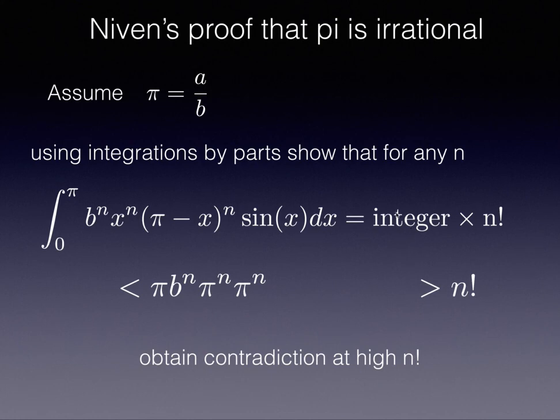At very large n, our equality has to be bigger than something, which is smaller than this term, and it also has to be smaller than that. This is why pi cannot be rational.